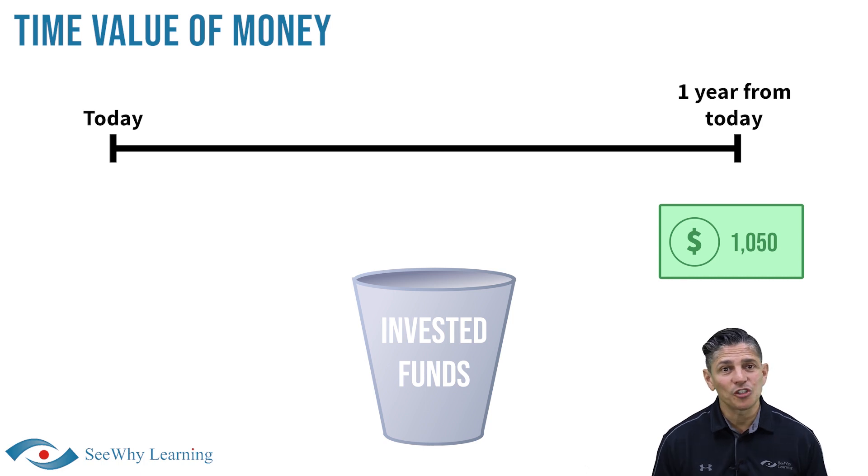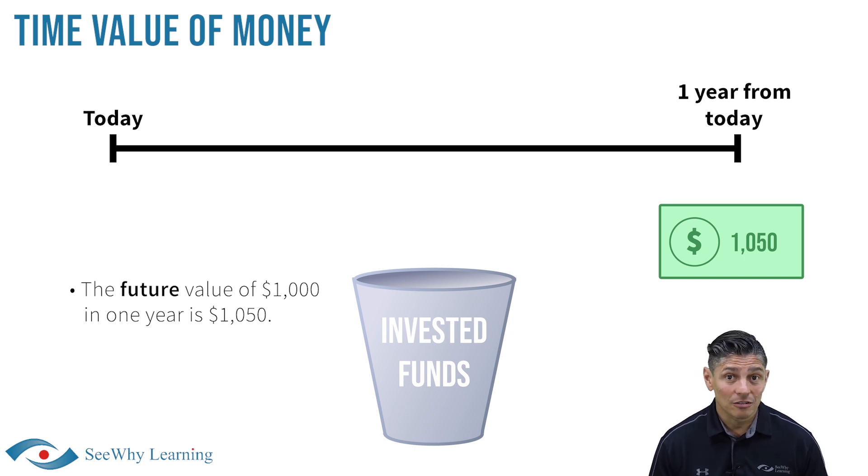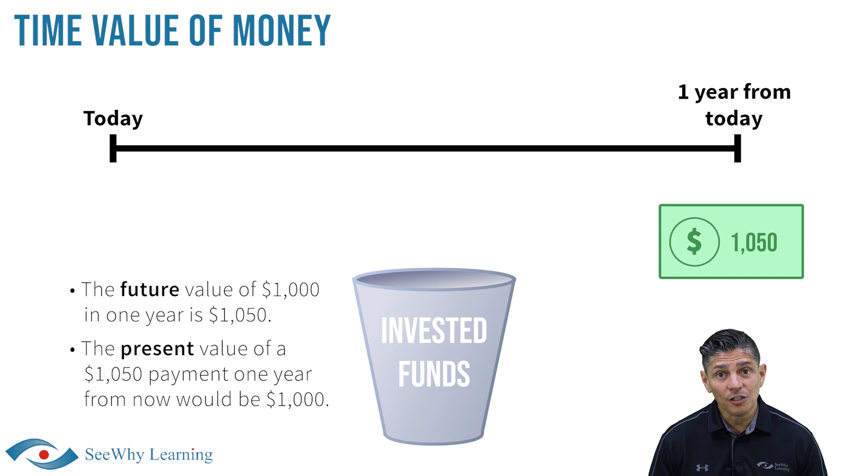Stated another way, assuming a 5% return, the future value of $1,000 in one year is $1,050. On the other hand, the present value of $1,050 payment one year from now would be $1,000.